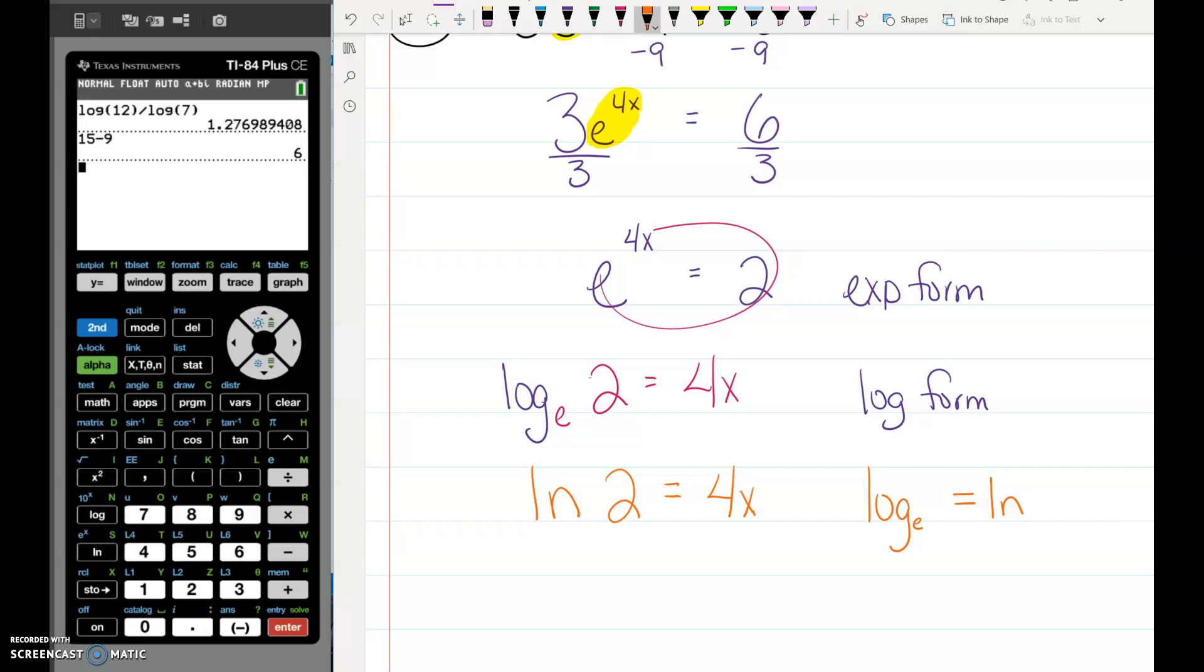That actually makes this problem easier because we don't have to do any change of base. We just type in ln 2. We get that decimal. So we have 0.693. We need to finish this problem by dividing both sides by 4. And whatever decimal you get, that's what x is going to equal.